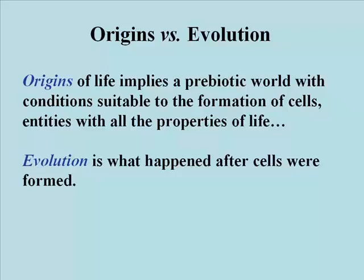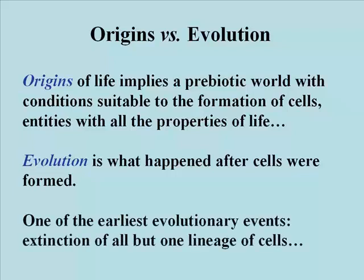One of the earliest evolutionary events must have been the spread of the progeny — the descendants of the progenote — at the expense of other cells. Other lineages of cells, perhaps with DNA, but with different genetic codes or different ways of harnessing environmental energy, for example, must have gone extinct very early on.